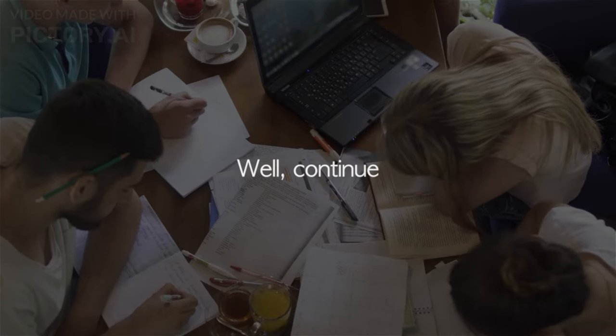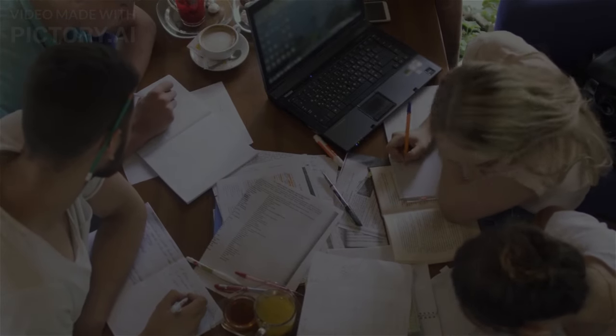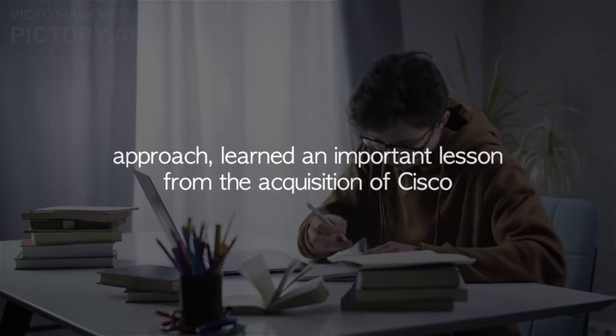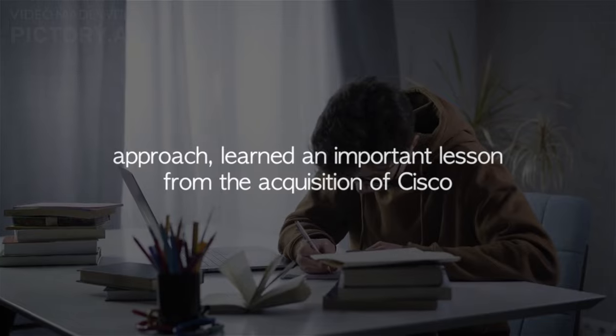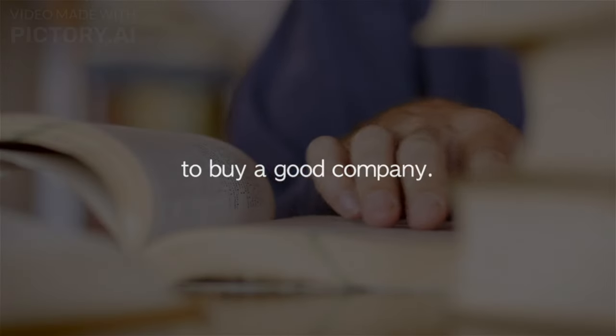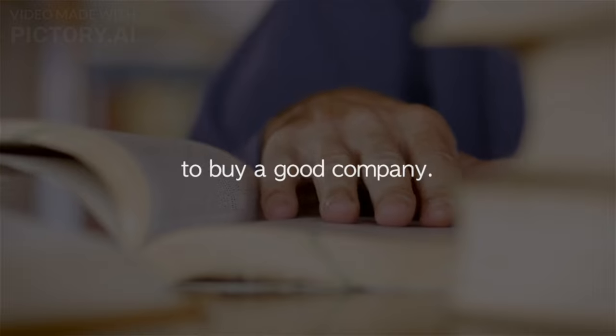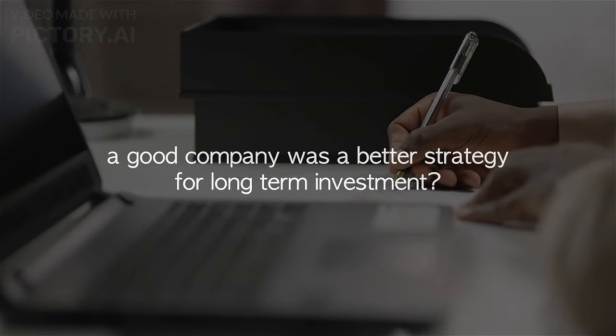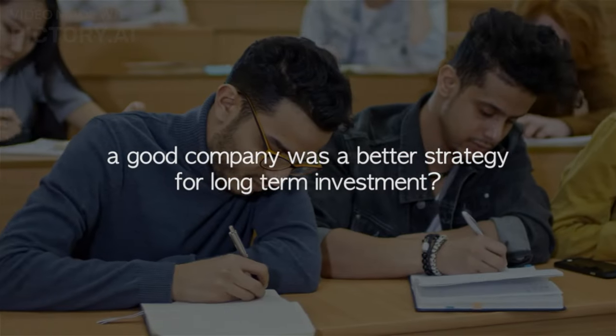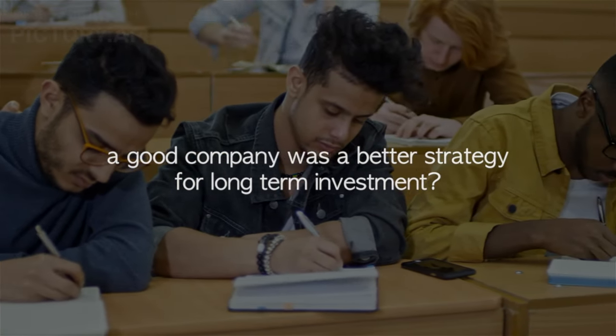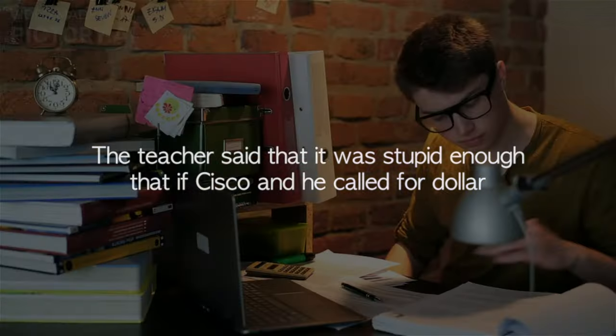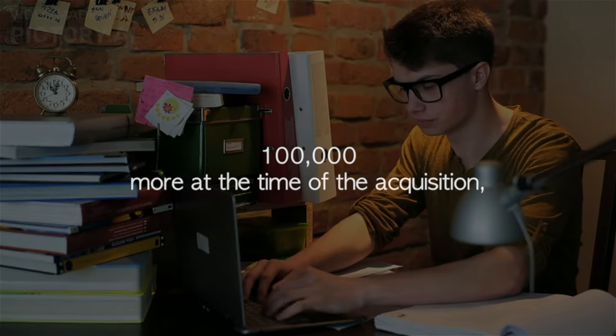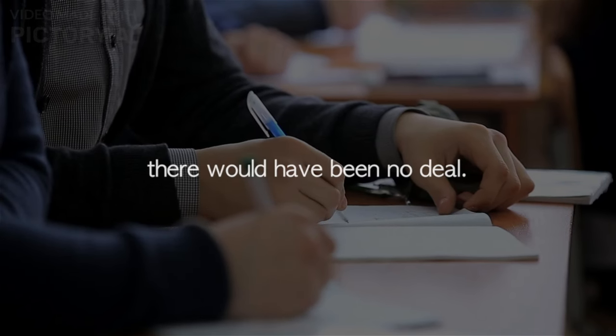Well, continue. An investor told you that Warren Buffett, who was following Ben Graham's investment approach, learned an important lesson from the acquisition of See's Candy to buy a good company. In what ways did you realize that the idea of buying a good company was a better strategy for long-term investment? The teachers said that it was stupid enough that if See's Candy called for $100,000 more at the time of the acquisition, there would have been no deal.